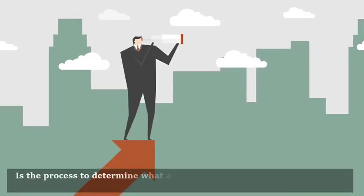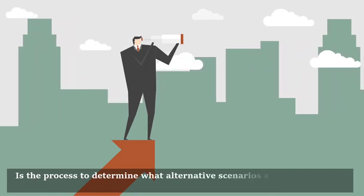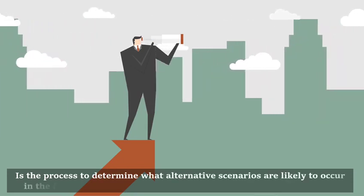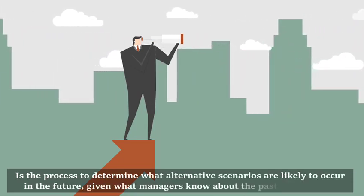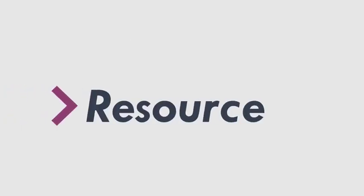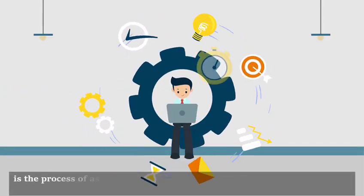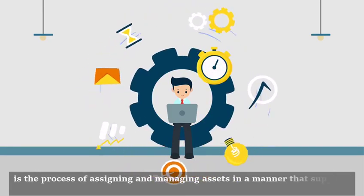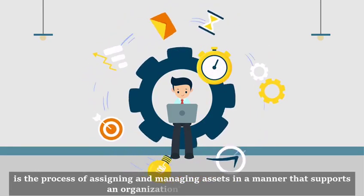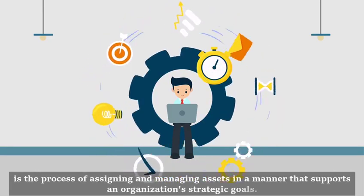Forecasting is the process to determine what alternative scenarios are likely to occur in the future, keeping what managers know about the past and present. Resource allocation is the process of assigning and managing assets in a manner that supports an organization's strategic goals.